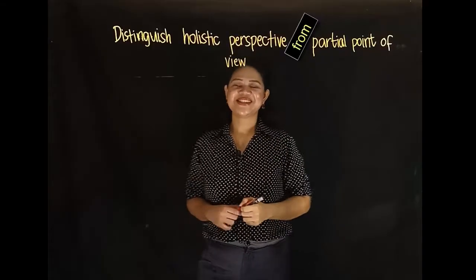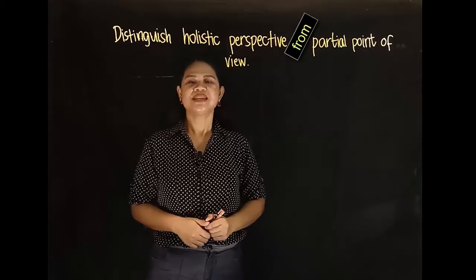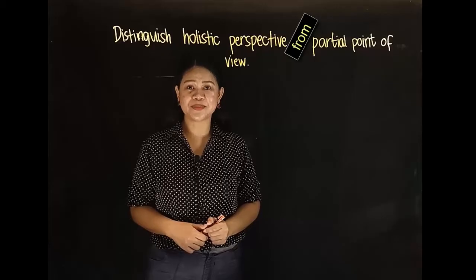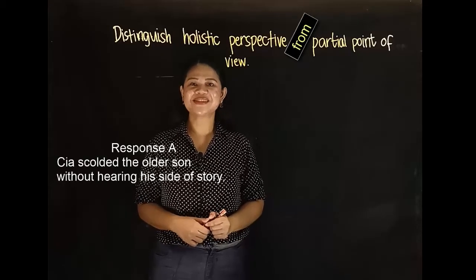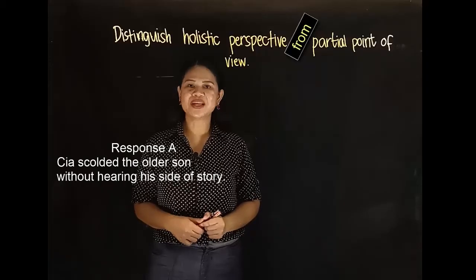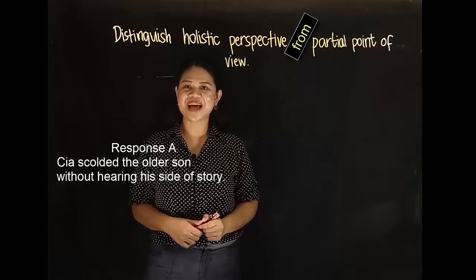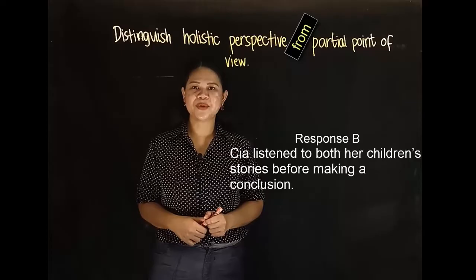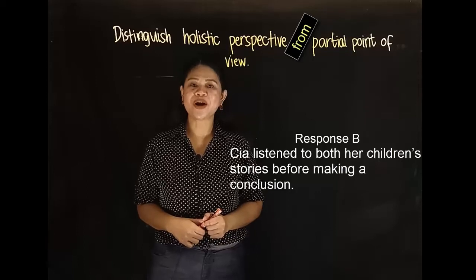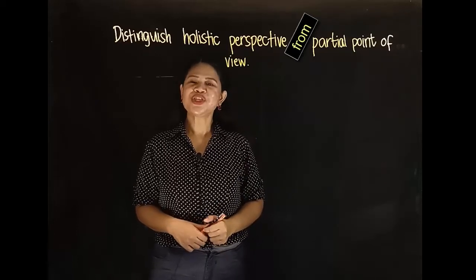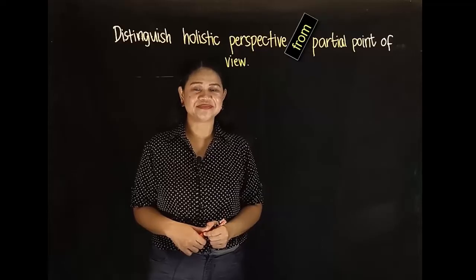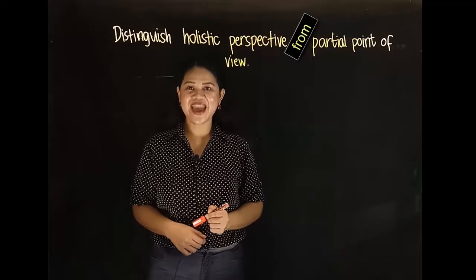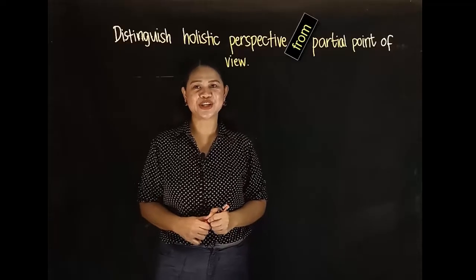In explaining this, I will give you an example. Sia's children had a fight and the younger son cried. Here are the two possible responses. Response A is that Sia scolded the older brother without hearing his side of the story. Response B is that Sia listened to both her children's stories before making a conclusion. What do you think is a more desirable response? If we associate it to our lesson, response A is an example of partial point of view.